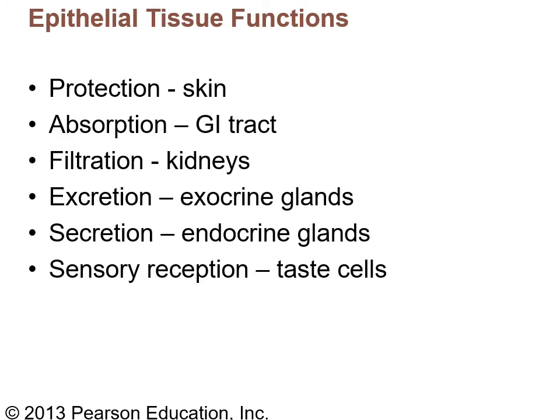Starting with epithelium — its first function is protection. Nothing is more protective in the human body than unbroken skin, so it's a barrier. Another function is absorption; epithelia that line the GI tract help absorb nutrients. Epithelium also makes up the nephrons, which are little filtration units found in the kidneys.